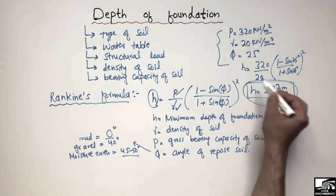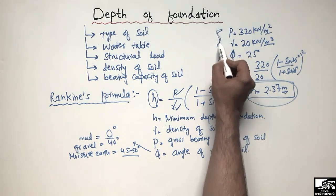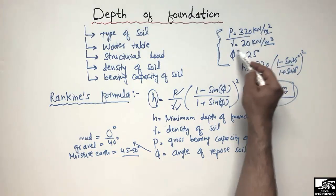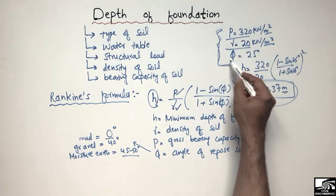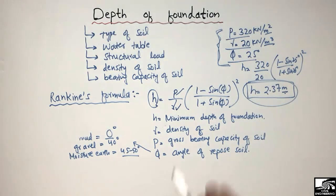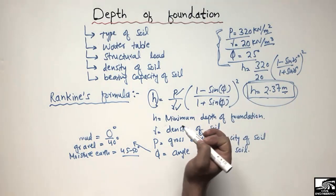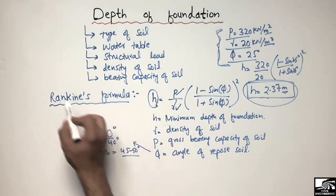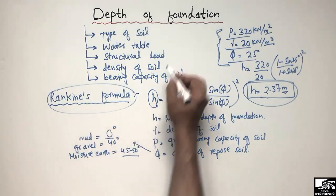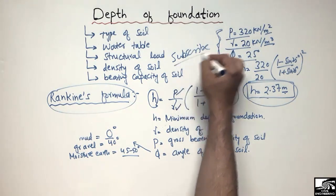So our minimum depth of foundation for such soil conditions is 2.37 meters. From this value onwards you can take a higher depth of foundation, but this is the least value — the minimum foundation depth you must take into consideration when your soil has a gross bearing capacity of 320, a density of 20, and an angle of repose of 25 degrees. This was just an example to show how to find the minimum depth of foundation using Rankine's formula. Hope you guys understand, and don't forget to subscribe to our channel for more engineering videos. Thank you for watching.